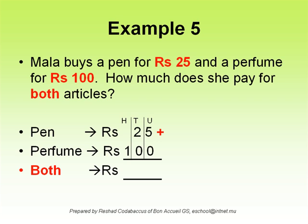Example 5: Mala buys a pen for Rs 25 and a perfume for Rs 100. How much does she pay for both articles?